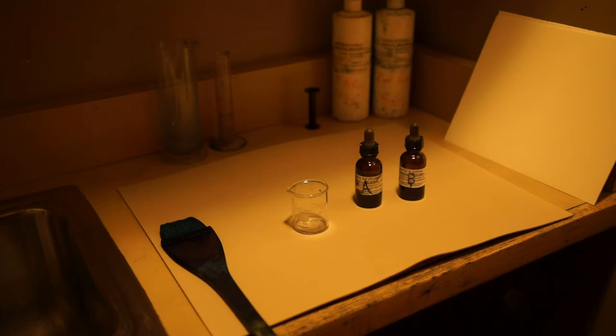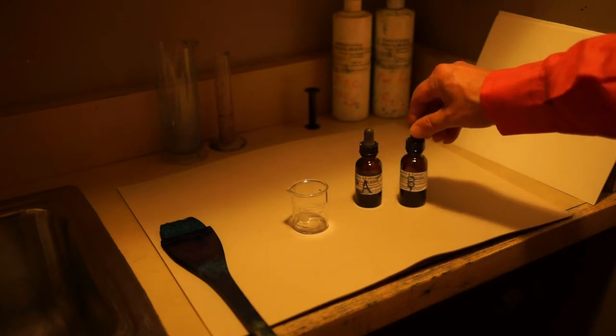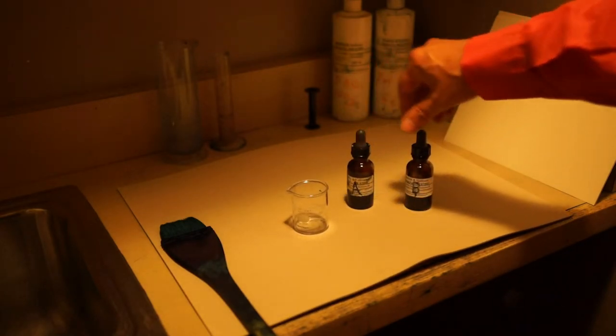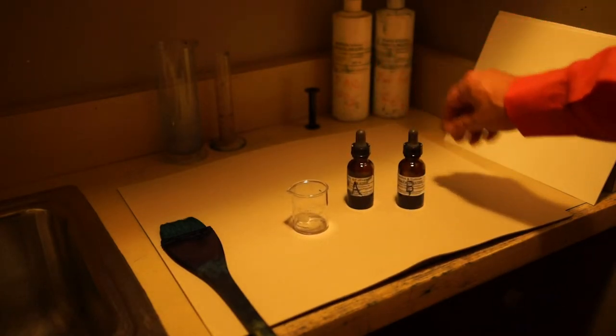Here we're going to sensitize paper for cyanotype printing. There's two solutions involved: A, ferric ammonium citrate, and B, potassium ferrocyanide.